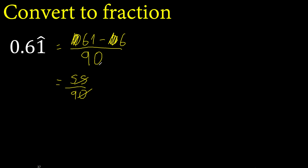Divided by 5. Divided by 5 is 11. 90 divided by 5 is 18. Finish. Thank you.